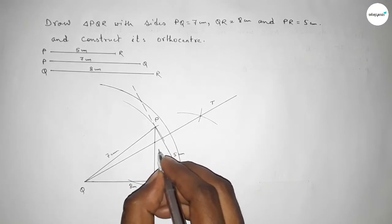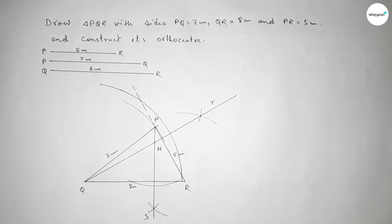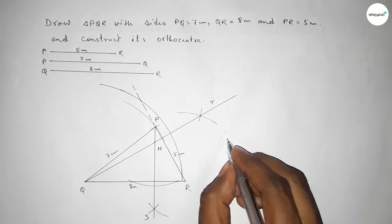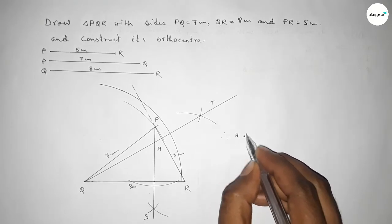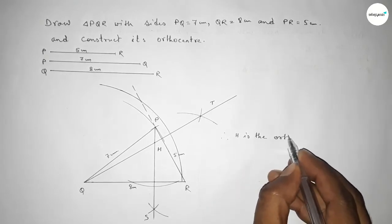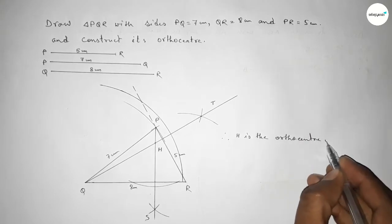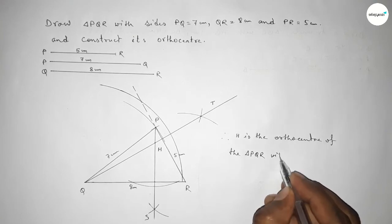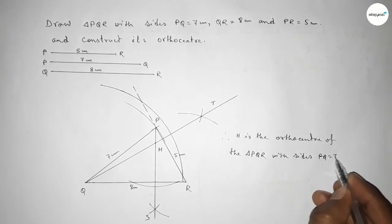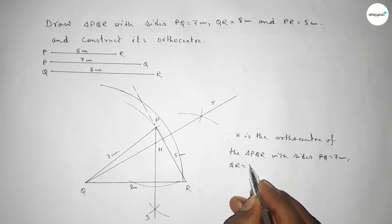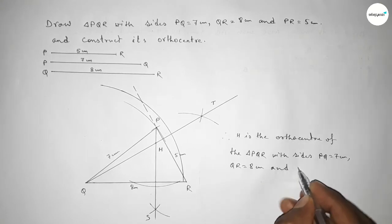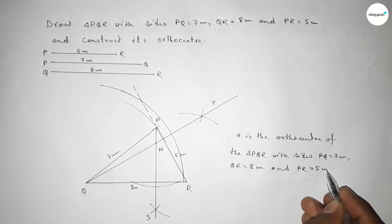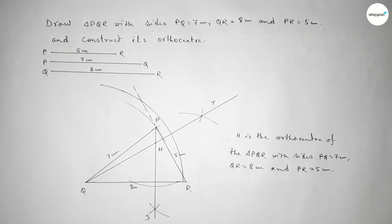This point H is the orthocenter. Therefore H is the orthocenter of triangle PQR with PQ equal to 7 cm, QR equal to 8 cm, and PR equal to 5 cm. That's all — thanks for watching. If this video is helpful to you, please share it with your friends.